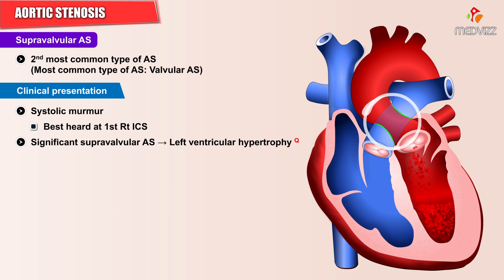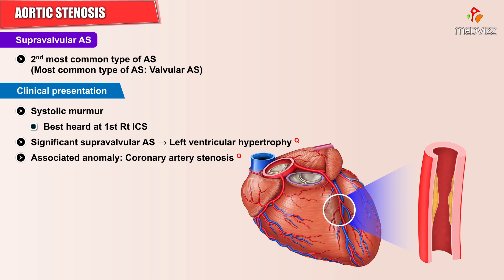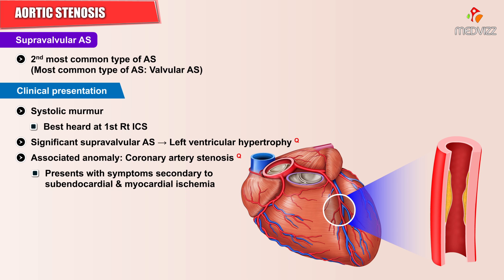Patients with significant supravalvular aortic stenosis develop left ventricular hypertrophy over time. Some patients can have an associated carotid artery stenosis and can present with symptoms secondary to subendocardial myocardial ischemia.